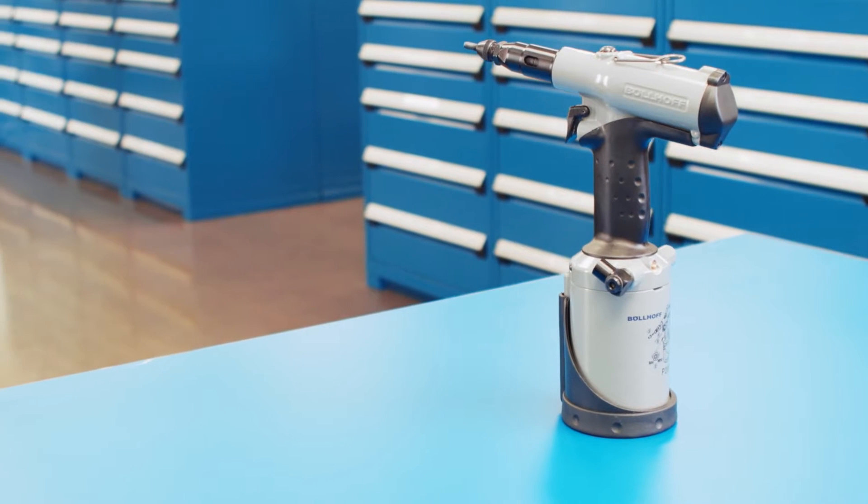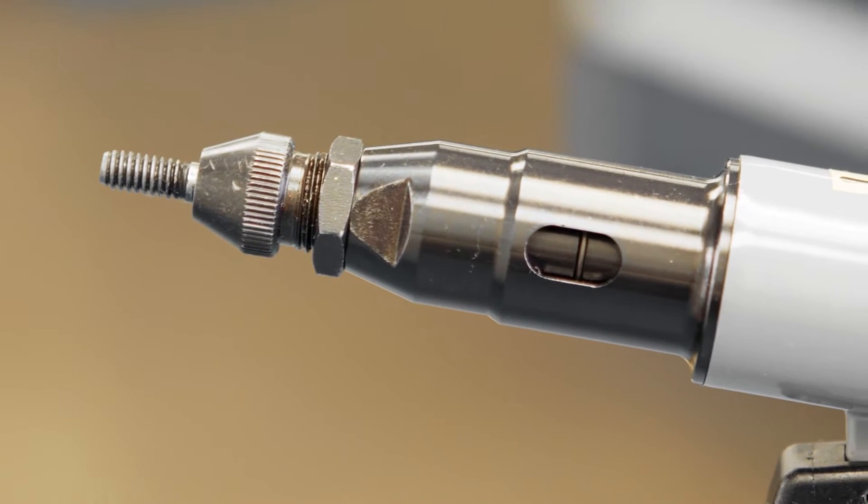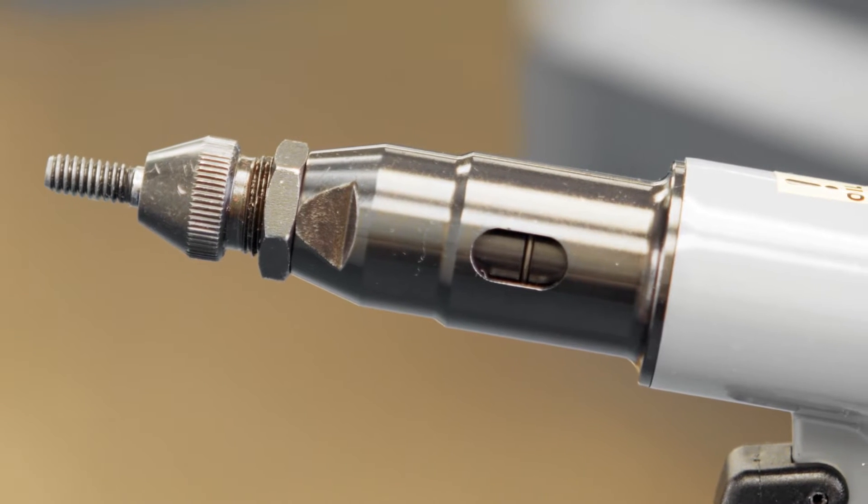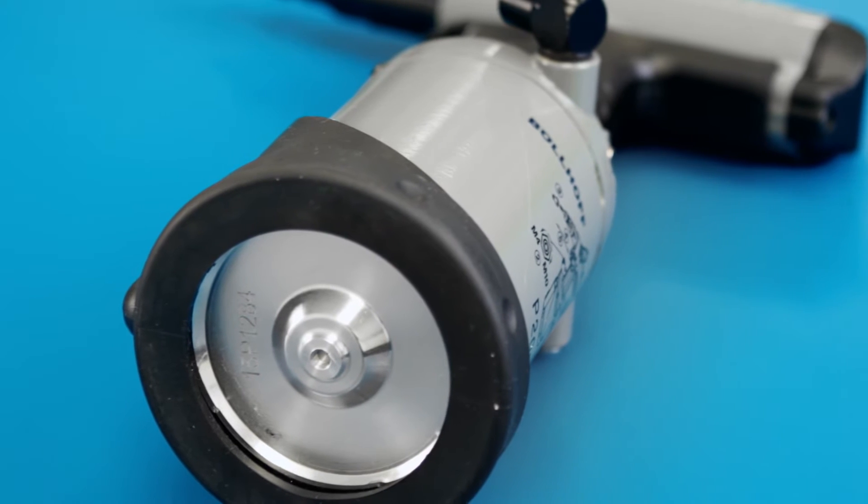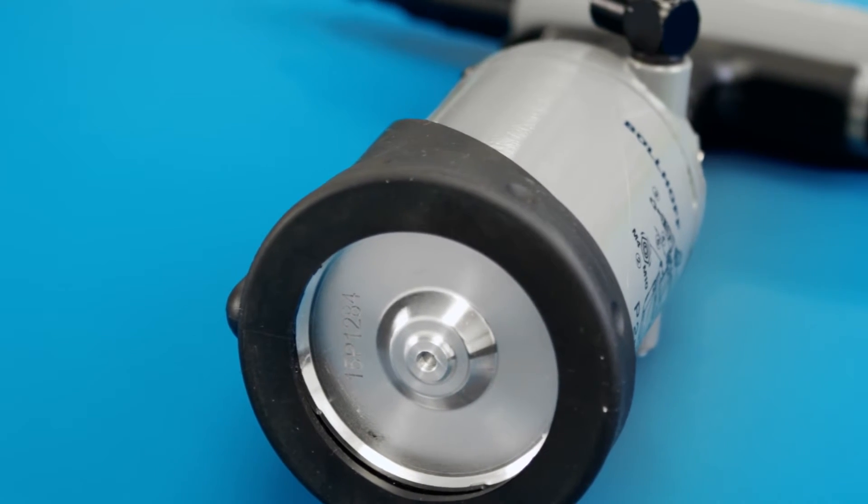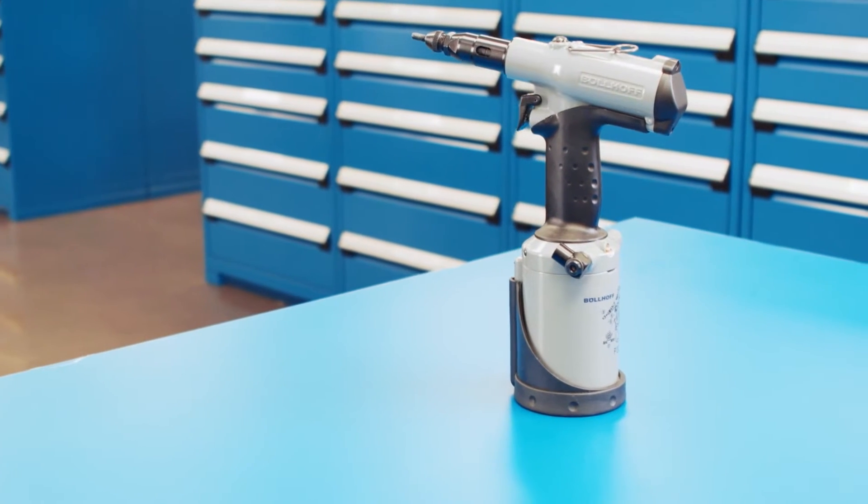It utilizes a single trigger control with an automatic spin-off. This process ensures a reliable installation while minimizing installation time. The P2007 will install many different rivnut fasteners or rivstud fasteners into a variety of thicknesses using pull to pressure technology.